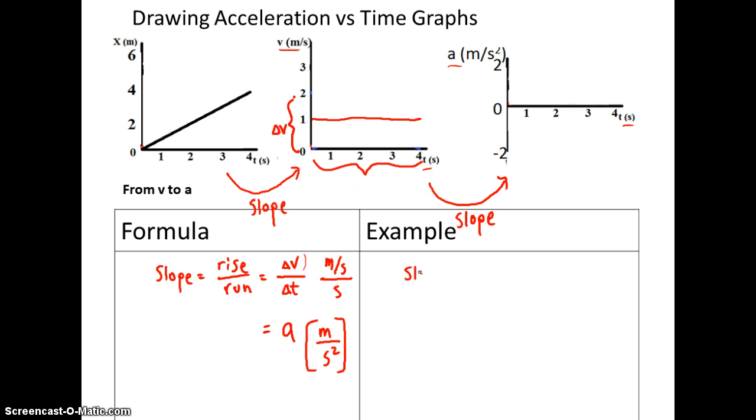Our slope is equal to the change in v all over the change in t. Now we've got to look at this graph and say, is it changing its velocity at any time? If it's not, then we don't have any change in velocity. If you were to look at two points, we have 0, 1, or 0, 1, 4, 1.